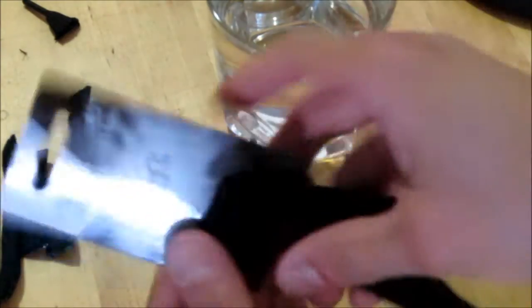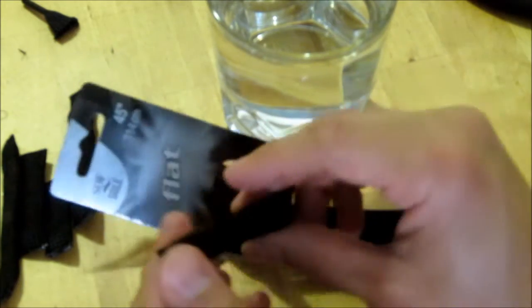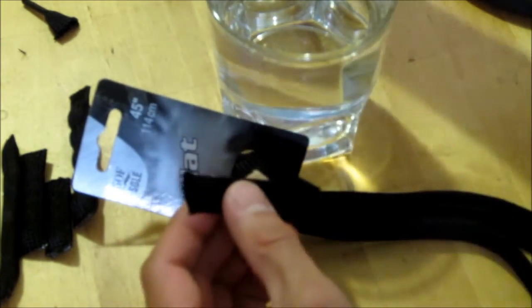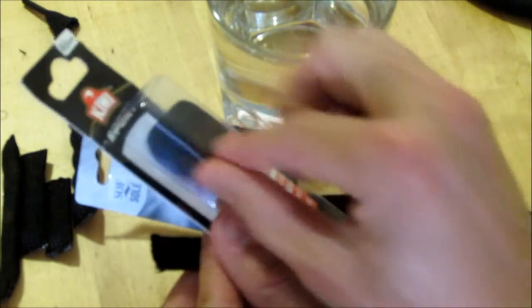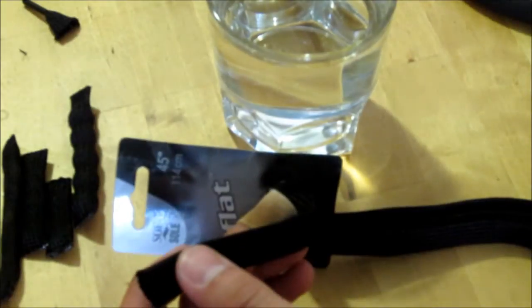So what you need is just some shoelacing, some of this flat shoelacing. This big fat stuff is nice. I also sometimes use thinner stuff to make smaller weights. We'll use the big stuff for this example.